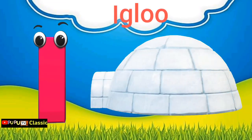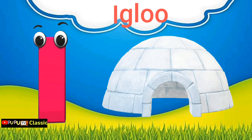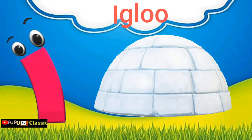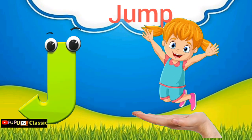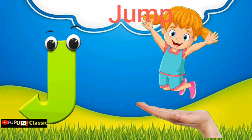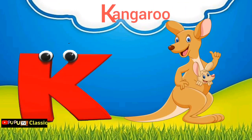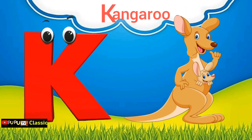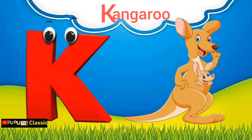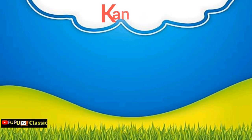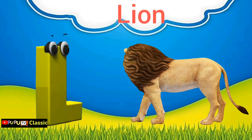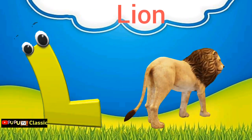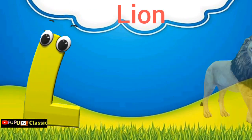I is for Igloo, I-I-Igloo. J is for Jump, J-J-Jump. K is for Kangaroo, K-K-Kangaroo. L is for Lion, L-L-Lion.